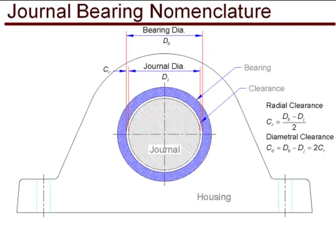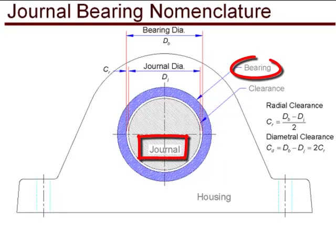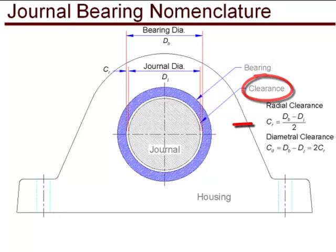A brief look at nomenclature of the bearing. First is the journal, that is a part of the rotating shaft that is inside the bearing, and that has to have some clearance. There is what we call radial clearance, and there is also diametral clearance which is just two times the radial clearance.